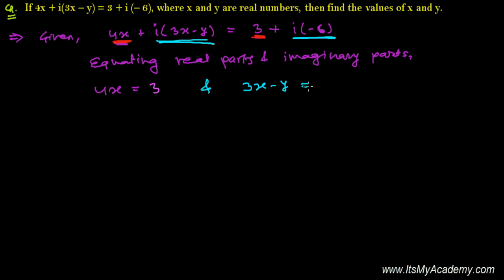3x minus y equals minus 6. So from here you get x equals 3 over 4. Now you can put the value of x as 3 by 4, so 3 over 4 minus y equals minus 6, and 3 times 3, that's 9 over 4.